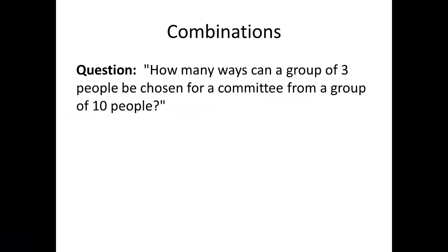Suppose I asked you this question: how many ways can a group of three people be chosen for a committee from a group of ten people? At first this kind of has the ring of the permutations we've talked about so far. But what makes this different from a permutation is that there's nothing special about being selected first versus being selected third.